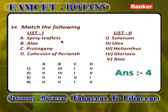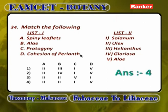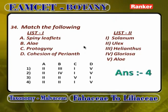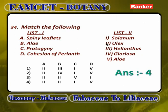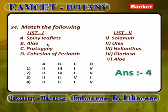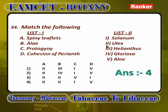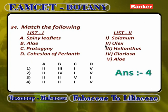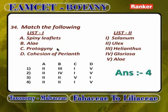Matching: spiny leaflets — Ulex (a plant in Fabaceae with spiny leaflets); Alae — Aloe is 2; Protogyny — seen in Solanum; Cohesion of Perianth — seen in Helianthus. Answer is 4.